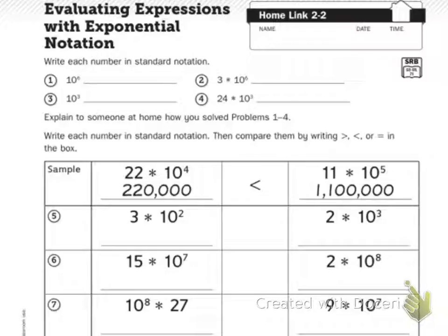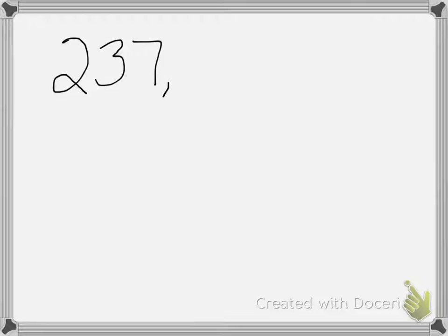We have been working on the powers of 10 and expanded notation in standard form. Standard notation is how we see numbers normally throughout the day. For example, standard form would be 237,586. That is standard form — that's how we write numbers normally, how we see them throughout the day.